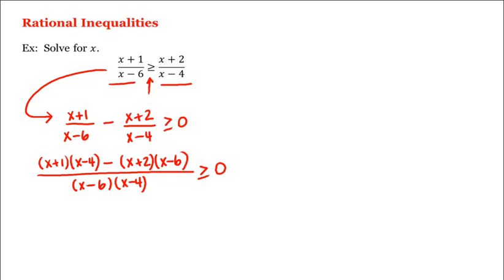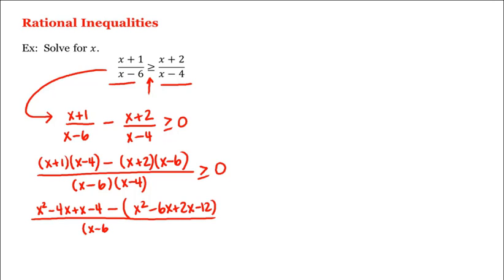And now let's FOIL the two expressions in the numerator, which gives us x squared minus 4x plus x minus 4, and then minus — be careful — it's minus the quantity x squared minus 6x plus 2x minus 12, still divided by x minus 6 times x minus 4.